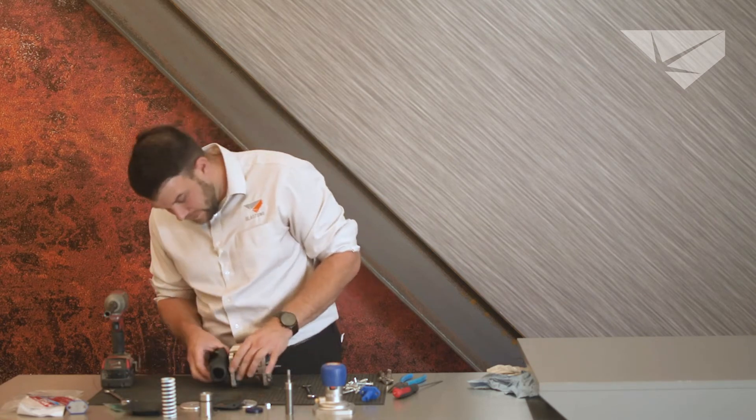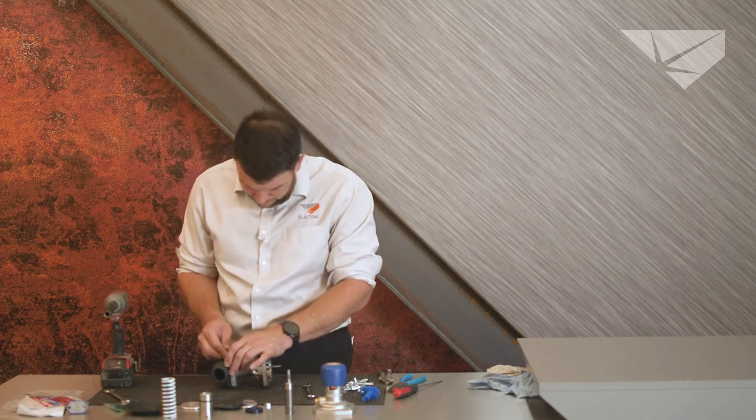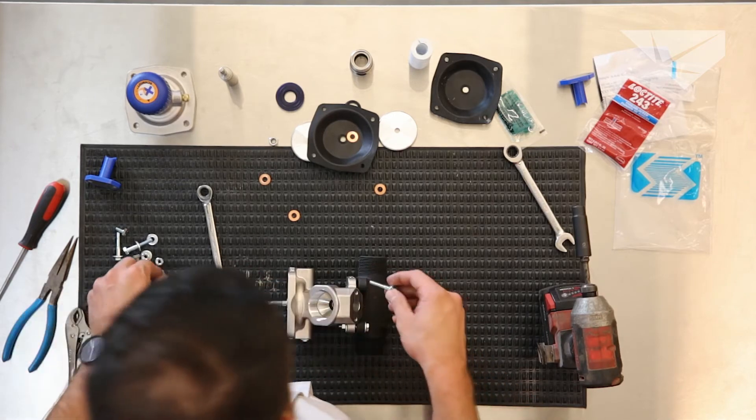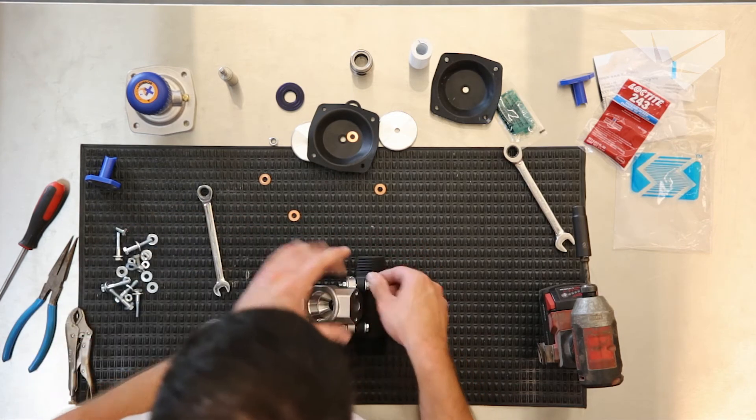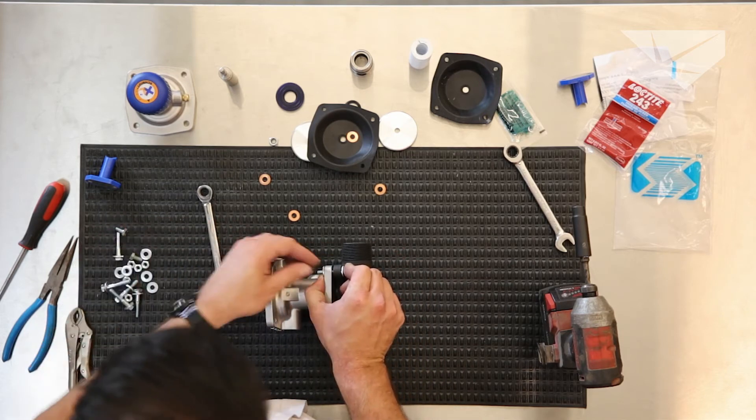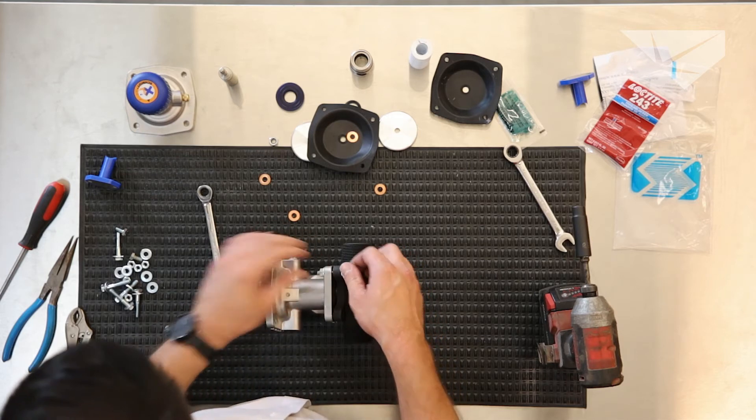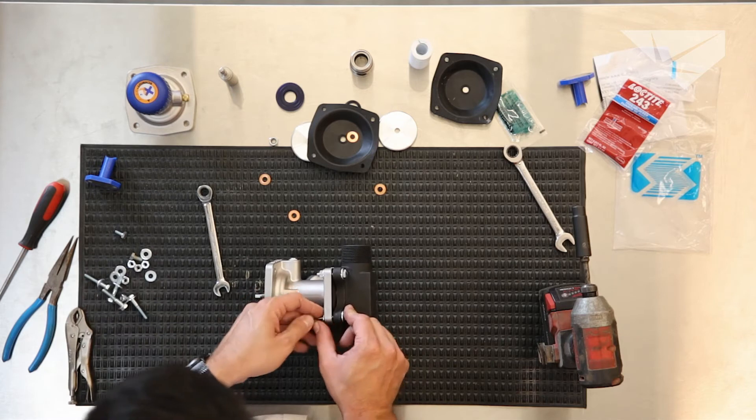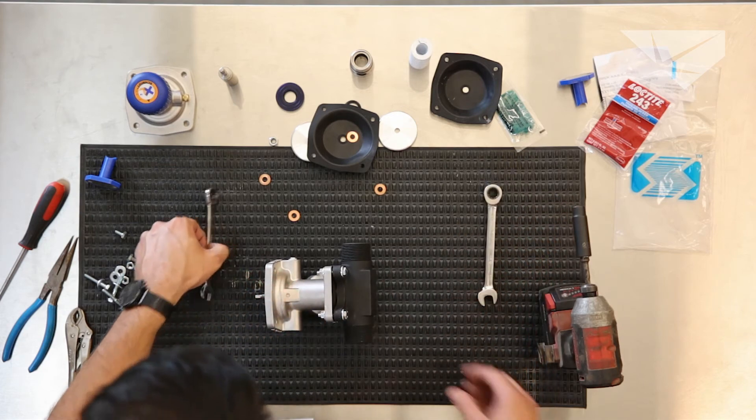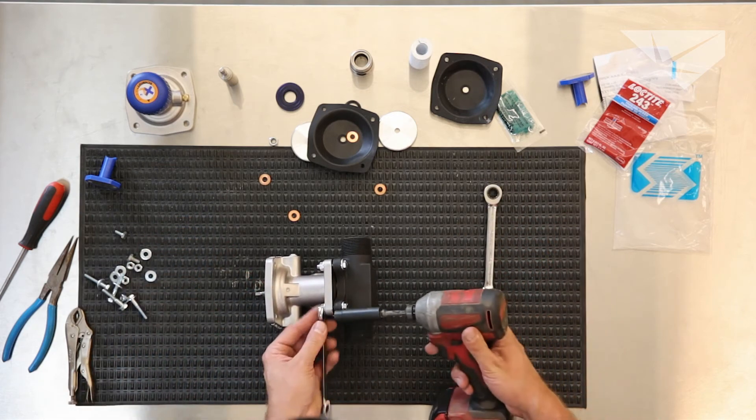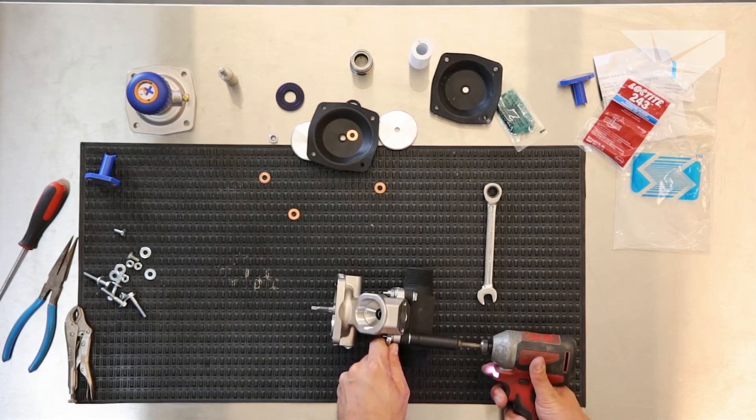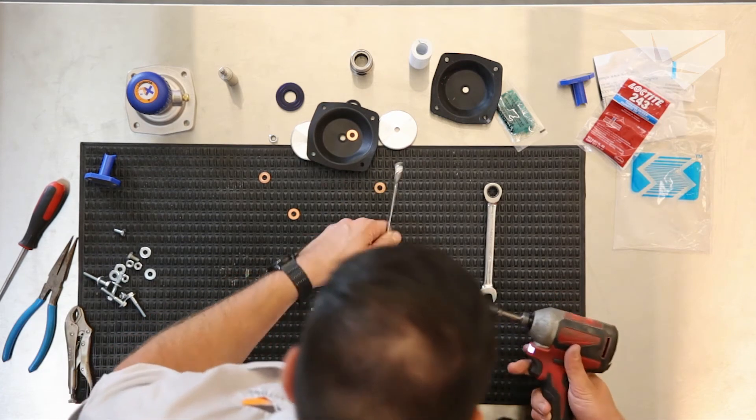And we're going to re-bolt up the base and tighten it down as well. Again, walk it on like a car wheel. You don't want to go side to side in the catty corner for the first two.